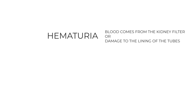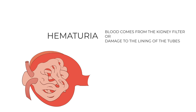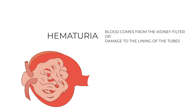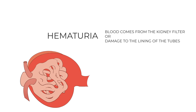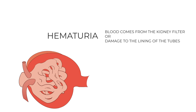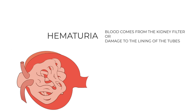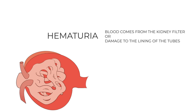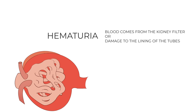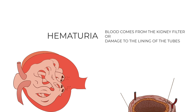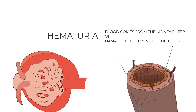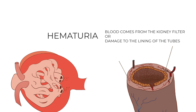So, in order to get hematuria — blood in your urine — blood has to come either from the kidney filter, the glomerulus, or there has to be damage somewhere down the road to the lining of the tubes. The tubes are a watertight structure, and so in order to get blood in them, there has to be damage at some location. So, blood from the filter, or blood from damage to the tubes down below.